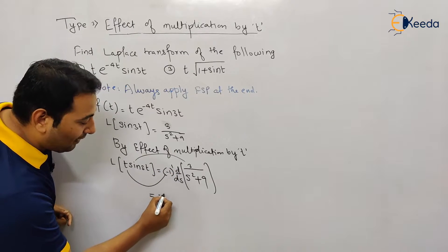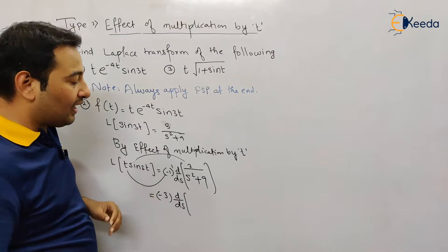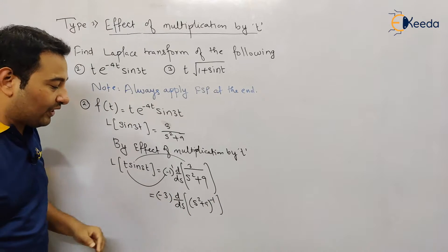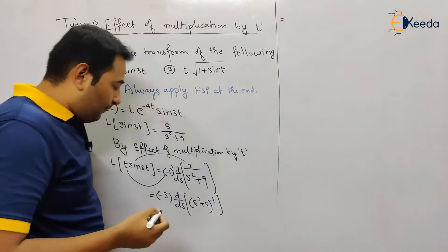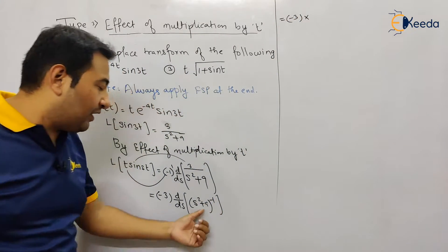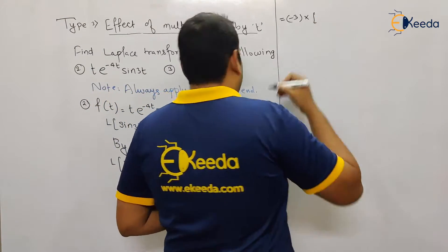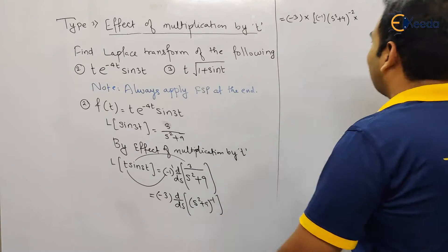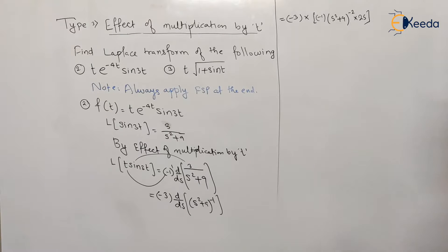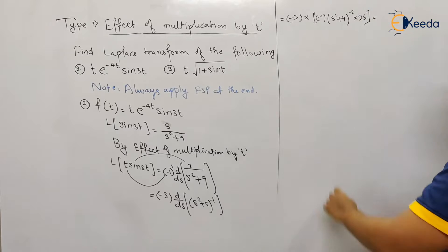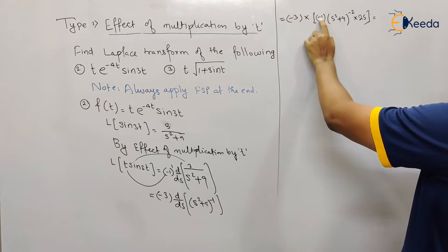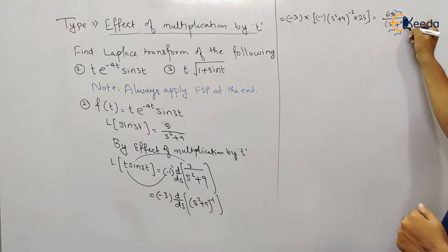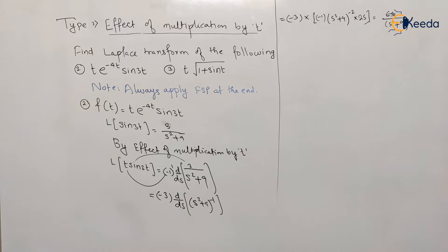This 3 you can take out, so this will be −3 · d/ds of [1/(s² + 9)], which can be written as (s² + 9)^(−1). We need to take the derivative: that will be −3 · (−1)·(s² + 9)^(−2) · 2s. So this gives 3 · 2s = 6s upon (s² + 9)². This is basically the Laplace of t·sin(3t).